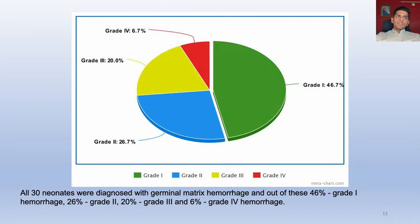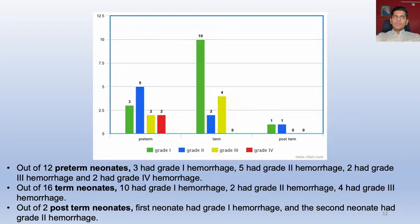All 30 neonates were diagnosed with Germinal Matrix Hemorrhage. Of these, 46% had grade 1, 26% had grade 2, 20% had grade 3, and 6% had grade 4 hemorrhage. Of the 12 preterm neonates: 3 had grade 1, 5 had grade 2, 2 had grade 3, and 2 had grade 4 hemorrhage. Of the 16 term neonates: 10 had grade 1, 2 had grade 2, and 4 had grade 3 hemorrhage. Of the 2 post-term neonates: one had grade 1 and one had grade 2 hemorrhage.